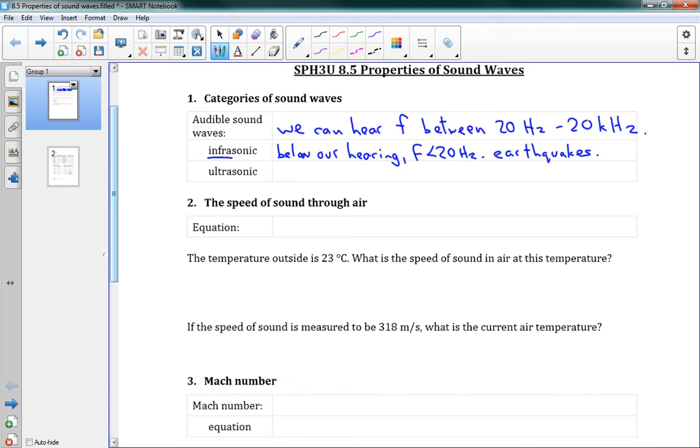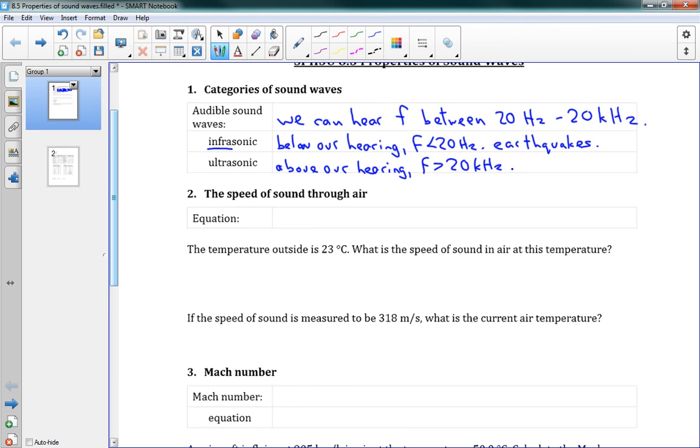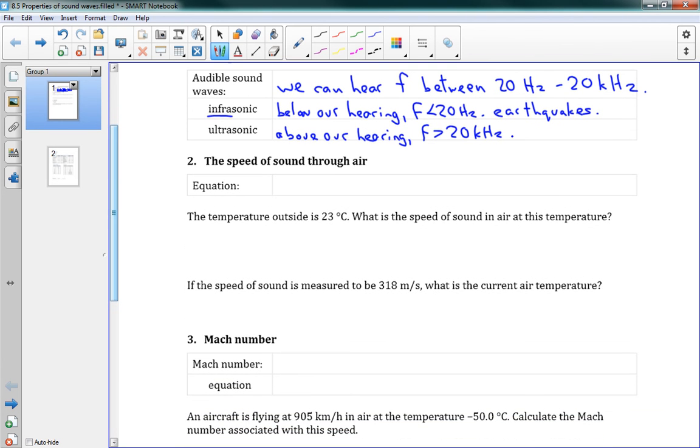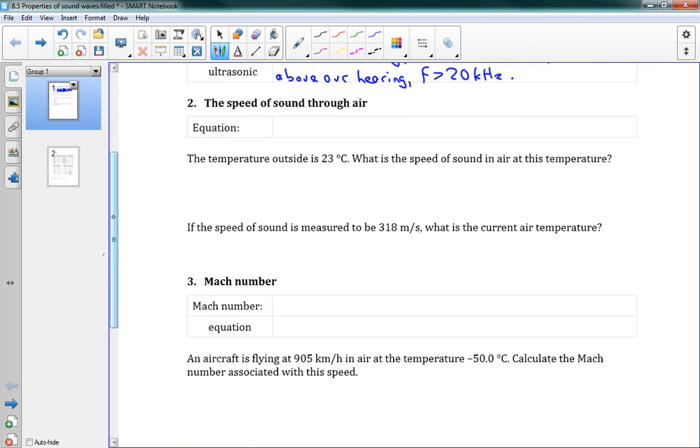Ultrasonic are past our hearing. They're higher than our hearing, and we can't hear them. It's these things like dog whistles that dogs can hear and we can't. So these are above our hearing, where F is greater than 20 kHz. Those are the three categories of sound. We're not doing any problems with those ideas. That's just to know that there's three categories of sound. And that we can hear between 20 Hz and 20 kHz.